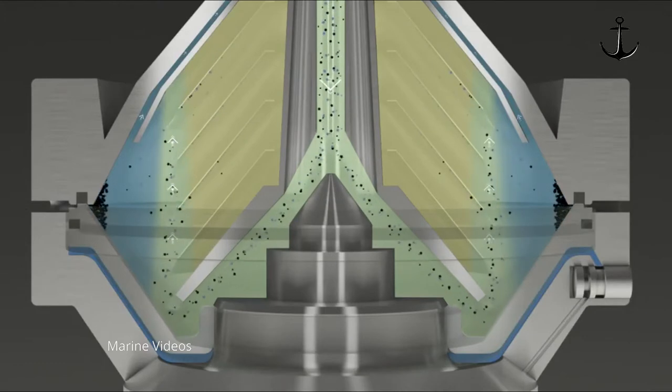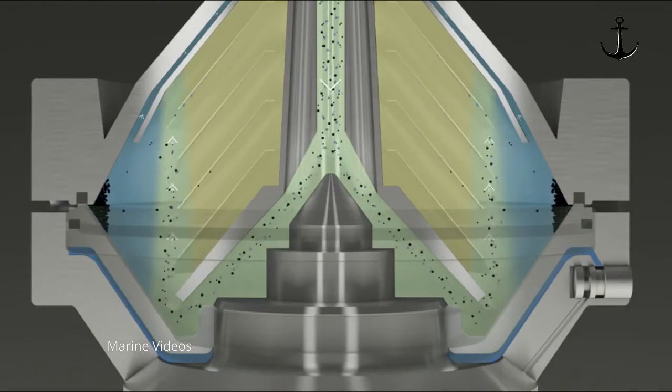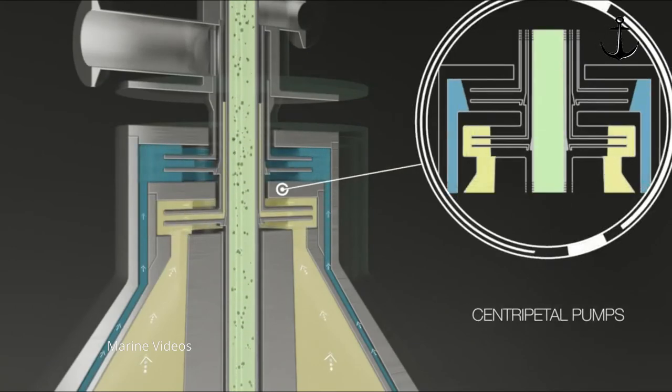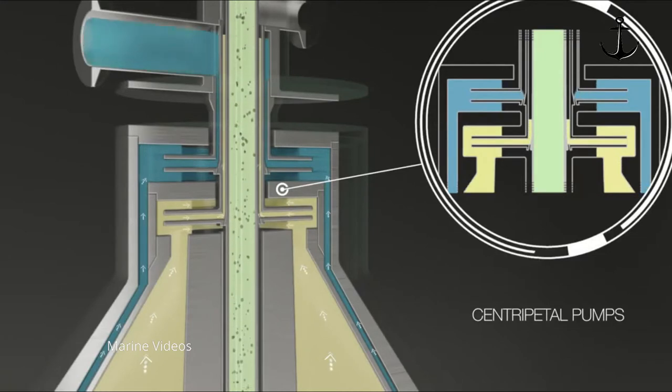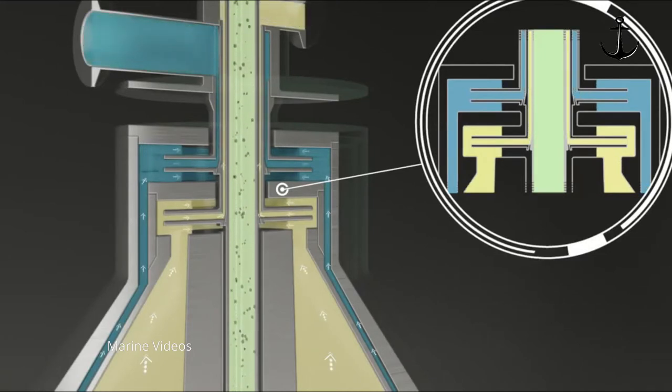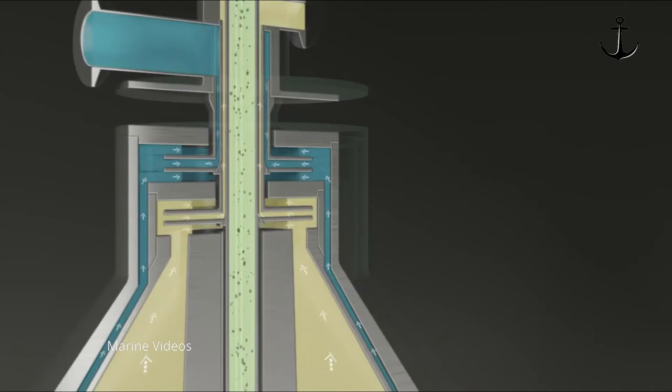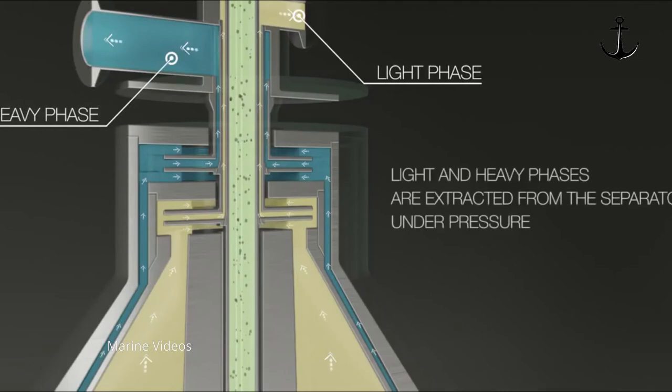Both the light and heavy phases rise along their respective paths and reach the centripetal pumps. As a result of the centrifugal force generated by the rotating movement, they are extracted from the separator.